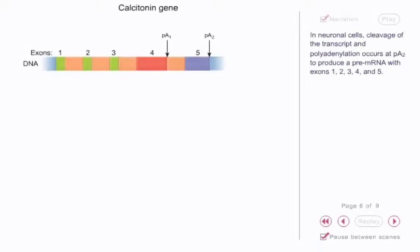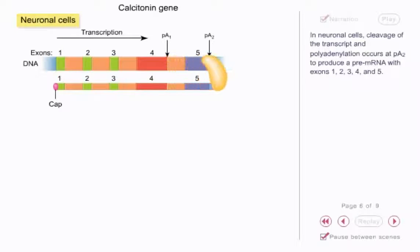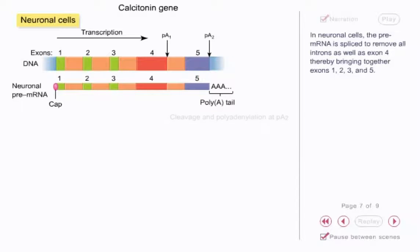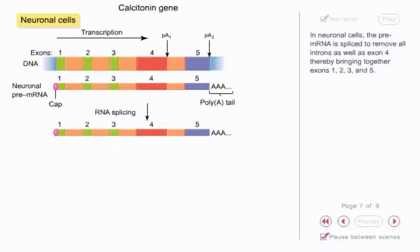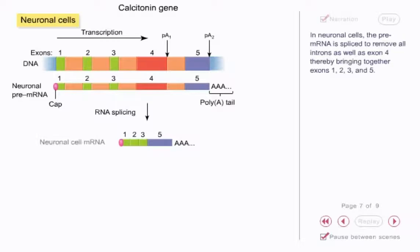In neuronal cells, cleavage of the transcript and polyadenylation occurs at PA2 to produce a pre-mRNA with exons 1, 2, 3, 4, and 5. In neuronal cells, the pre-mRNA is spliced to remove all introns as well as exon 4, thereby bringing together exons 1, 2, 3, and 5.